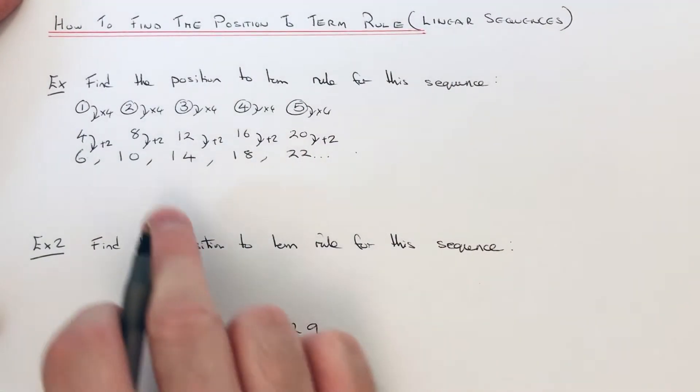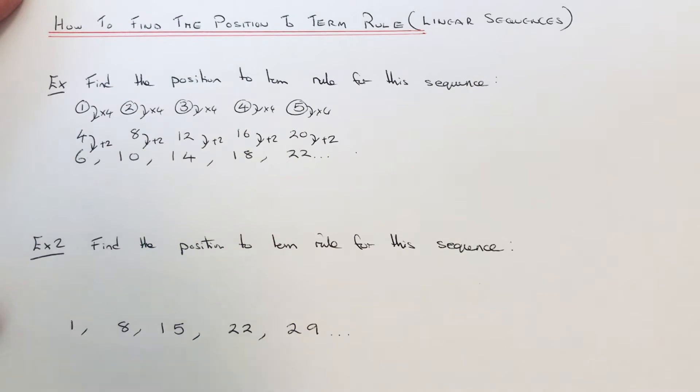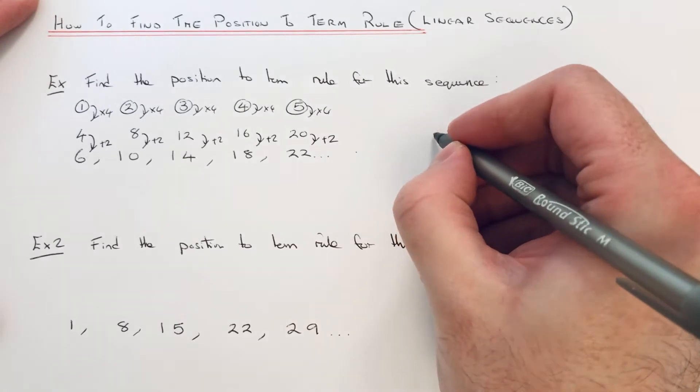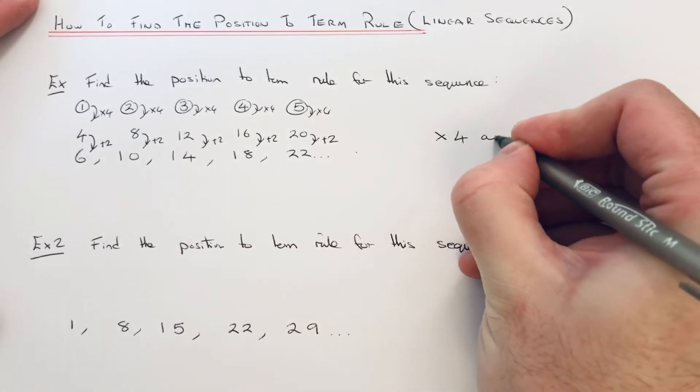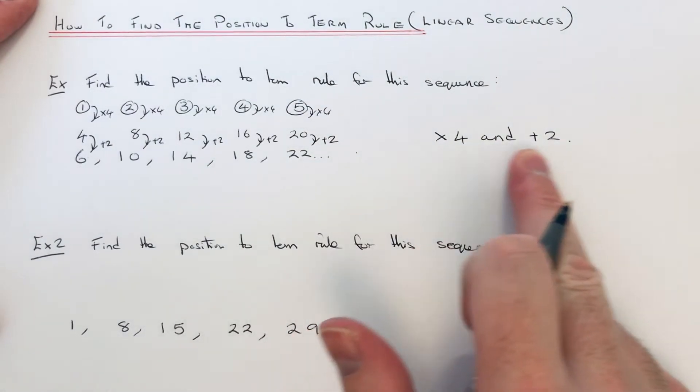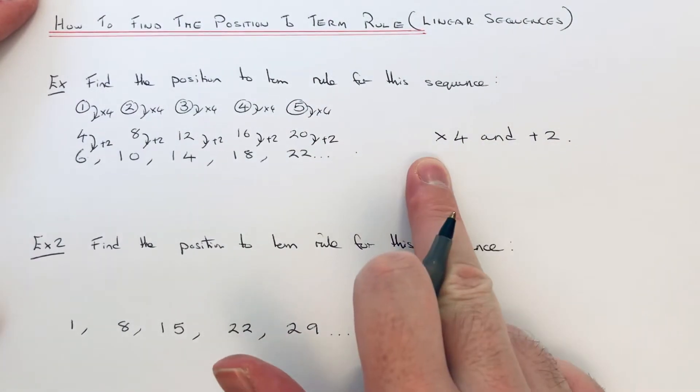So our rule for this sequence is to times the position number by 4 and then add 2. Our position-to-term rule is times 4 and add 2. You could write this as a formula as well, which is called the nth term.